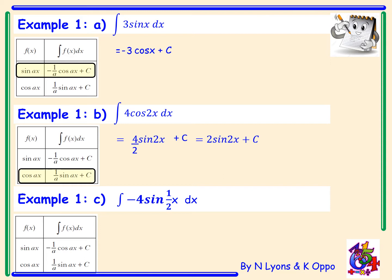Example 1c. Here we have the integral of negative 4 sin of a half x. Using the first rule from our table of integrals, sin integrates to negative cos. Because we have a negative 4 at the front, this becomes a positive 4. The sin of a half x becomes cos of a half x, and the half divides at the front, so it's 4 divided by one half, plus c. This simplifies to 8 cos of a half x plus c.